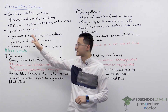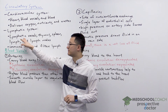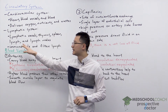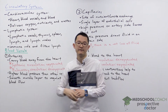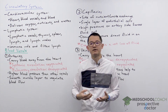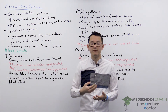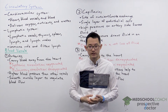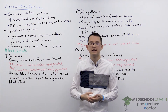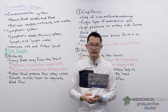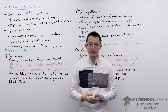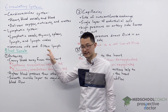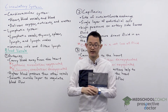The lymphatic system includes the lymphatic vessels, thymus, spleen, lymph and lymph nodes. The lymphatic system has an important immune role and also functions to filter and return the lymph fluid back into the heart. In subsequent videos we'll go through the lymphatic system in more detail.